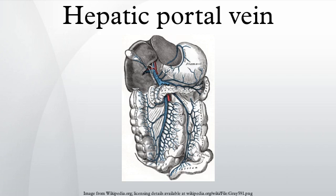The hepatic portal vein is a blood vessel that conducts blood from the gastrointestinal tract and spleen to the liver. This blood is rich in nutrients that have been extracted from food, and the liver processes these nutrients. It also filters toxins that may have been ingested with the food. 75% of total liver blood flow is through the hepatic portal vein, with the remainder coming from the hepatic artery proper.